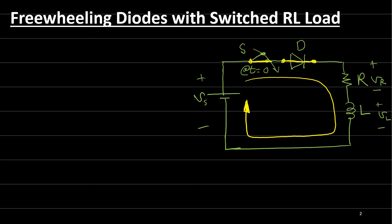Now the problem is when we switch off — when we try to open this switch and make it open circuit — what happens at this moment? We have energy stored in this inductor and this energy needs to go somewhere. If we switch off the switch and make it open circuit, all the energy will go and be dissipated in the switch, in this transistor for example, and this switch will be damaged.